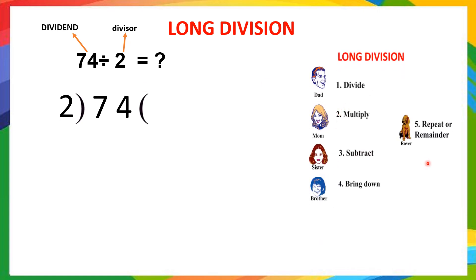Now, we will use our mnemonic. What is that one mnemonic? You can say along with me. Dad, mom, sister, brother and rover. First step is divide, next multiply, subtract, bring down and repeat or you get remainder you can stop. Now, 2. That means we are using here 2 multiplication table. Here, if you see in 74, the highest place value digit is 7 here. So, we will start with 7.